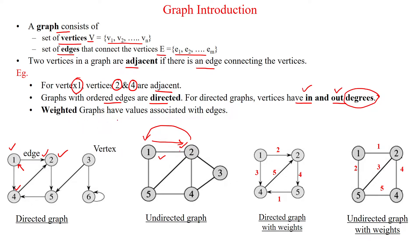Weighted graphs have values associated with edges. In a directed graph, if each edge is having a weight, then it is called a weighted graph. Similarly, an undirected graph given with weights is also called a weighted graph. So this is the undirected graph, and this is the directed graph.